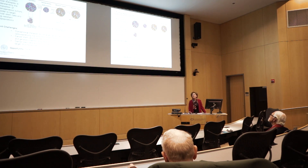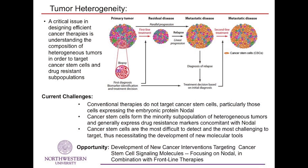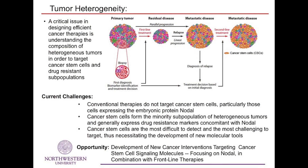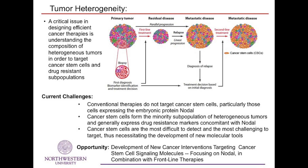The overall goal is to tell you about the importance of tumor heterogeneity. A critical issue in designing efficient cancer therapies is really trying to understand the composition of these heterogeneous tumors in order to target cancer stem cell subpopulations that are generally considered drug resistant. If we follow this yellow cancer stem cell subpopulation starting from a primary tumor, we see just a minor subpopulation, but over time, after first-line treatment and relapse, this very minor population becomes the majority of a metastasis.